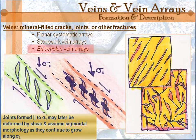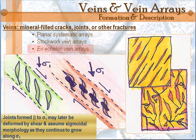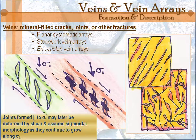Then you have what we call an en-echelon vein array. These are formed in a couple of different ways. First, you can have a filling of en-echelon joint arrays that are formed in the hackle fringe of a larger joint. The hackle fringe represents the breakup of that joint into short little segments whenever it enters a region of the rock that has a different stress field. So it breaks up, and that's one of the things that halts it.